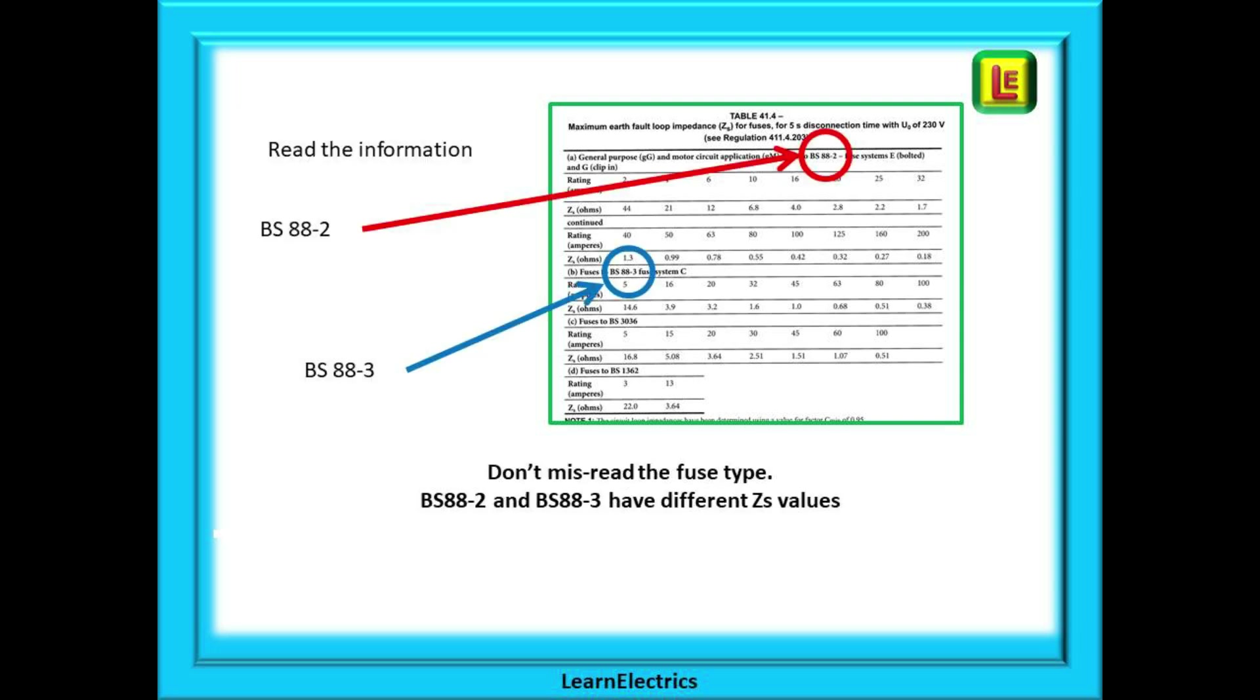Stay with this table on page 63. There are some sneaky little traps to mislead you. At the top of the page are listings for BS 88-2 fuses. And further down the table are the listings for BS 88-3 fuses. Make sure that you're in the correct section as asked by the question. They will have different values for ZS. And exam question setters know this and they will deliberately put in answers from the wrong tables.